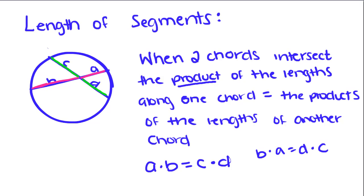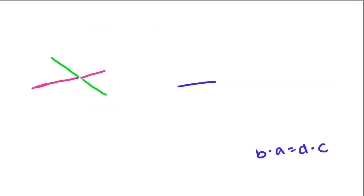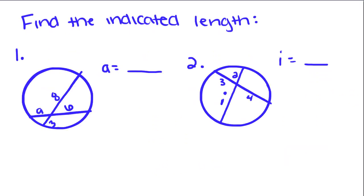Now we're going to do an example. Find the indicated length. We have this chord right here and this chord right here, and we're trying to solve for a. We need to take part of this chord, which is 8, multiply it by this other part, which is 3, and set it equal to 6 times a.